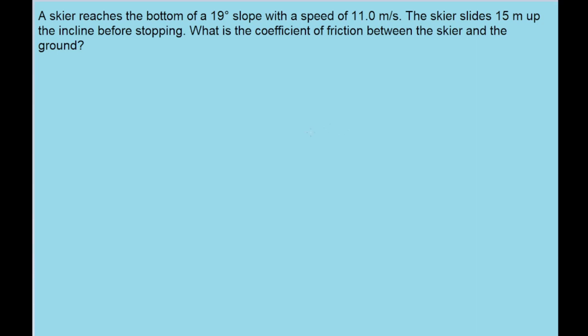In this problem, we have a skier who is skiing at some velocity and then approaches a slope of some distance and moves up the slope for some distance before stopping due to the friction. I'm going to say that the angle of the slope is theta, and the distance that the skier travels up the slope, I'm going to label as d.